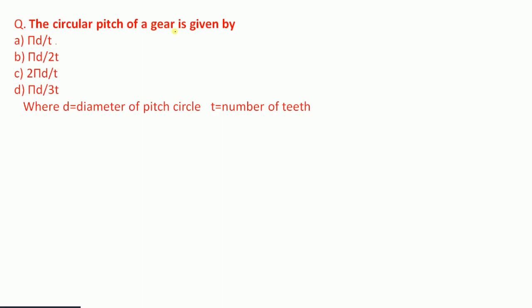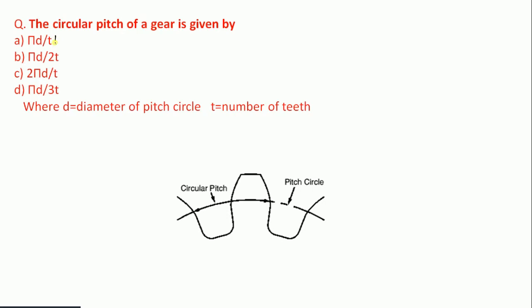Question 5: The circular pitch of a gear is given by — πd/t, πd/2t, 2πd/t, or πd/3t — where d is the diameter of the pitch circle and t is the number of teeth. The circular pitch is πd/t. This is the distance measured along the pitch circle from one tooth to the corresponding point on the adjacent tooth.